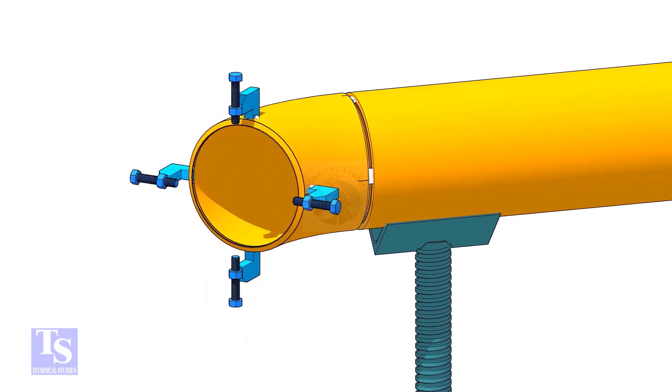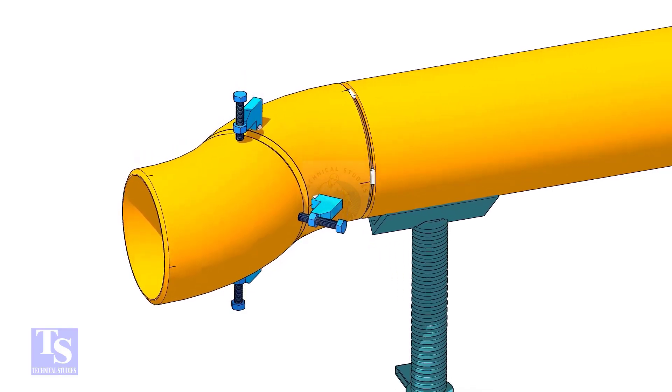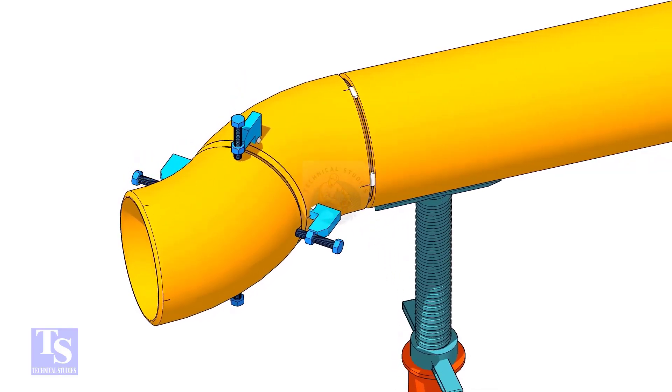Tack weld four jack bolts as shown. Put the other elbow in the jack bolts and match the center lines of both elbows.